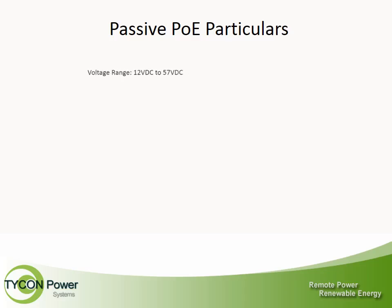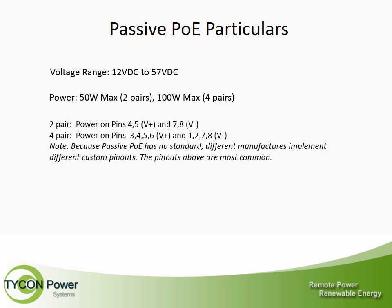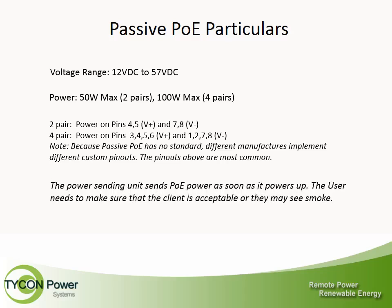Passive PoE particulars: The voltage range is 12V DC to 57V DC. Power is 50W maximum on two pairs, or 100W maximum on four pairs. Power is on pins 4 and 5 voltage plus, and 7 and 8 voltage minus. On four pairs, power is on pins 3, 4, 5, and 6 voltage plus, and 1, 2, 7, and 8 voltage minus. Because passive PoE has no standard, different manufacturers implement different custom pinouts — the above are most common. The power sending unit sends PoE power as soon as it powers up, so the user must ensure the client is compatible or they may see damage.